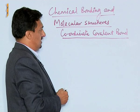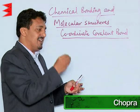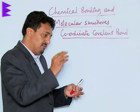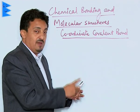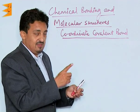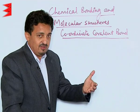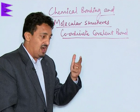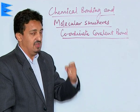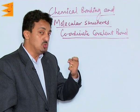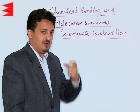What exactly is a coordinate covalent bond? We have been doing ionic and covalent bonds. This third type of bond is again a type of covalent bond, involving the sharing of electrons. However, the pair which is shared is contributed by only one of the bonded atoms — not one electron from each atom. Both electrons shared mutually by the two atoms are contributed by just one of the atoms.